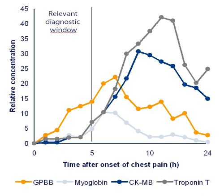An example is KRAS, an oncogene that encodes a GTPase involved in several signal transduction pathways. Prognostic biomarkers indicate the likelihood of patient outcome regardless of a specific treatment. Predictive biomarkers are used to help optimize ideal treatments and indicate the likelihood of benefiting from a specific therapy. Biomarkers for precision oncology are typically utilized in the molecular diagnostics of chronic myeloid leukemia, colon, breast, and lung cancer, and in melanoma.